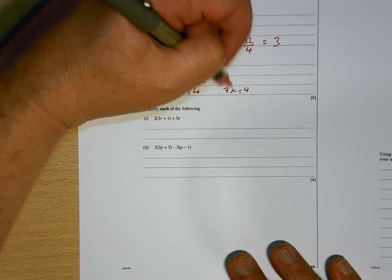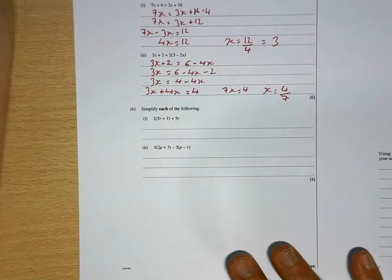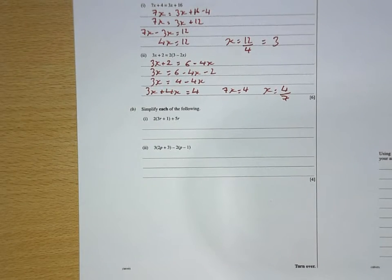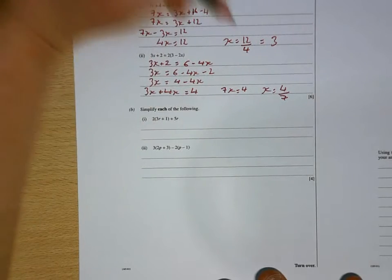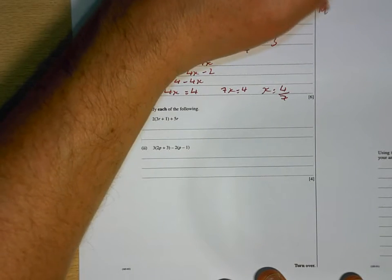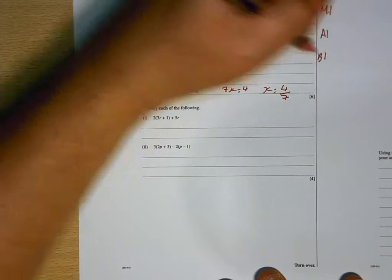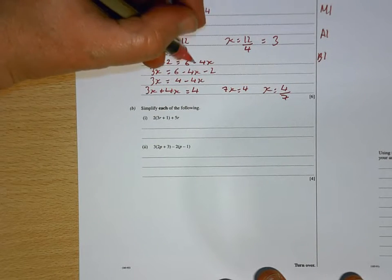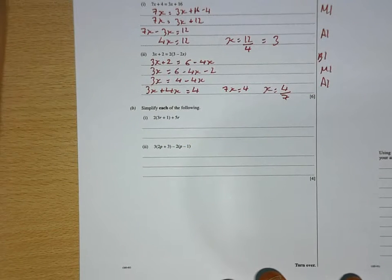So, 3X plus 4X is 7X equals 4. To get the X in its own, I've got to do the opposite of times it by 7, which is dividing by 7. And, like I said, in algebra, we write divide like that. So, there's 6 marks for that. There'll be 2 marks for the first one. And then, for the second one, there'll be 1 mark for multiplying out the bracket. And then, 1 mark for the method. And 1 mark for getting the right answer.